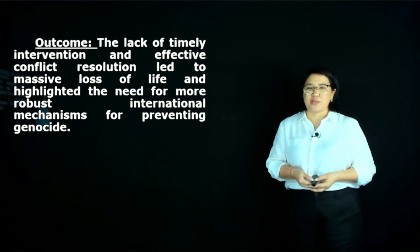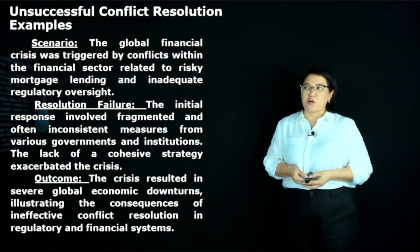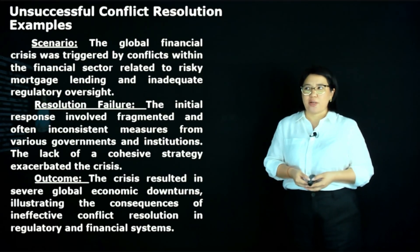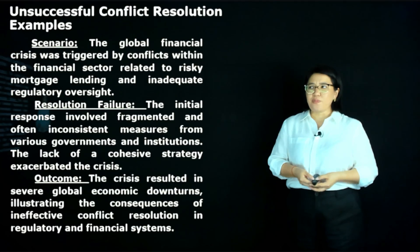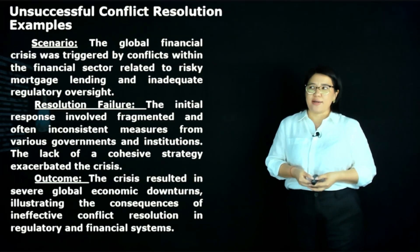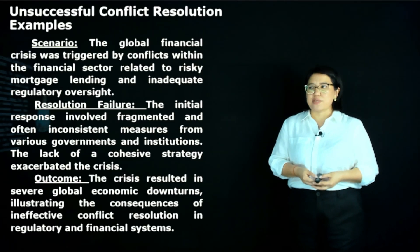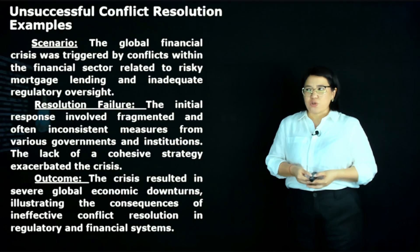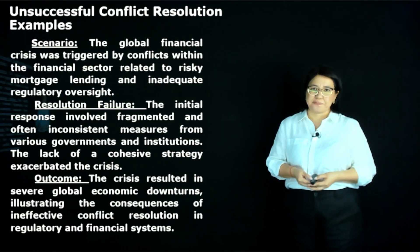This highlighted the need for more robust international mechanisms for preventing genocide. Another unsuccessful example is the global financial crisis, triggered by conflicts within the financial sector related to risky mortgage lending and inadequate regulatory oversight. The initial response involved fragmented and often inconsistent measures from various governments and institutions, and the lack of a cohesive strategy exacerbated the crisis, resulting in severe global economic downturns.